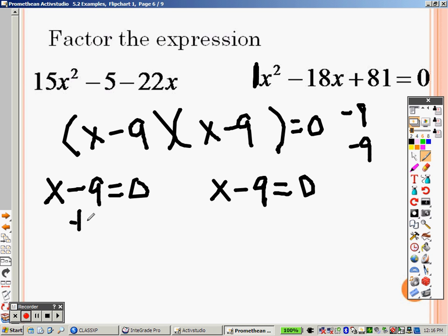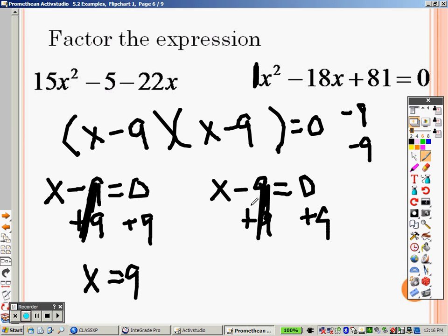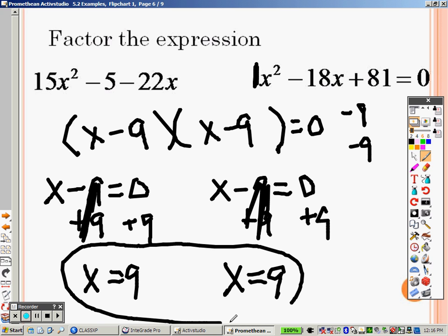So with this, that means I add 9 to both sides. So the 9's cross out, and I get 9 as my answer. I add 9 to both sides over here. It means the 9's cross out. I get x equals 9 as my answer. And even though they're the same, it's still two answers. x equals 9 and x equals 9.